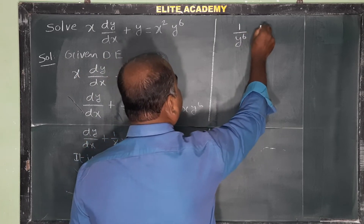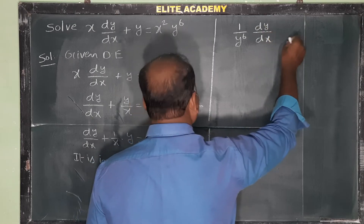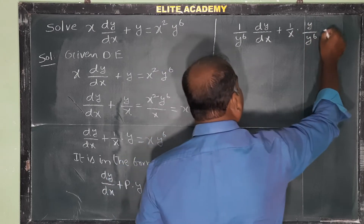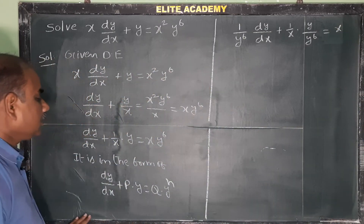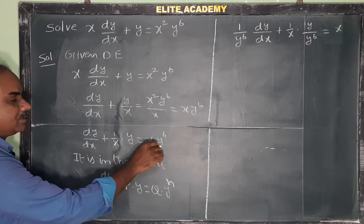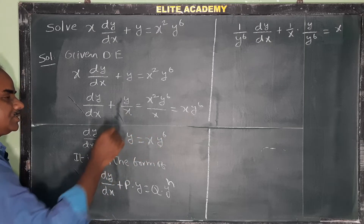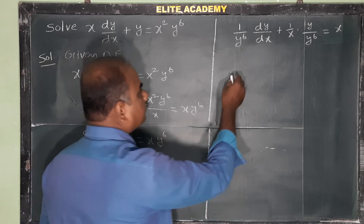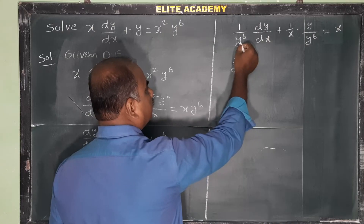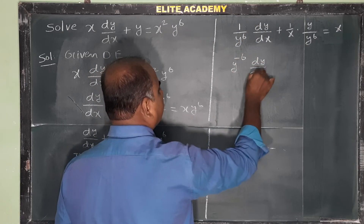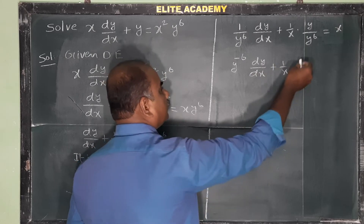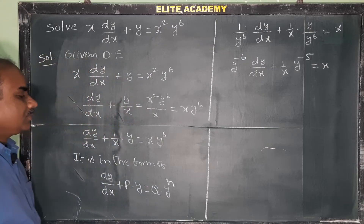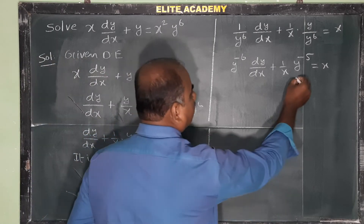Dividing the entire equation by y⁶: (1/y⁶) dy/dx + (1/x)·(y/y⁶) = x. This simplifies to y⁻⁶ dy/dx + (1/x)·y⁻⁵ = x.